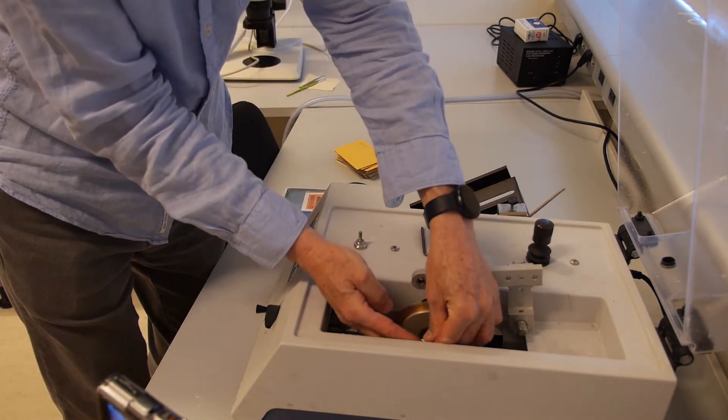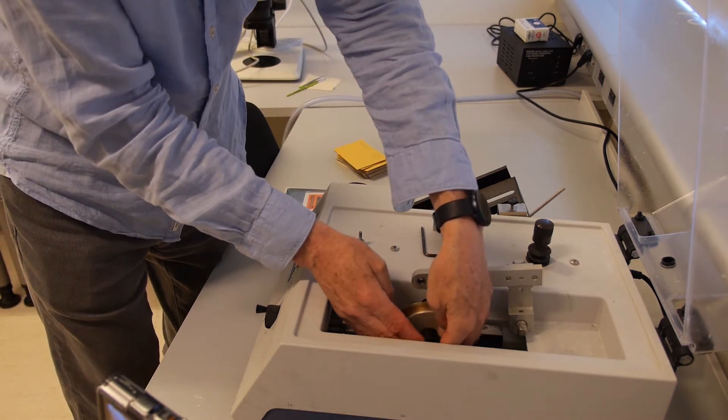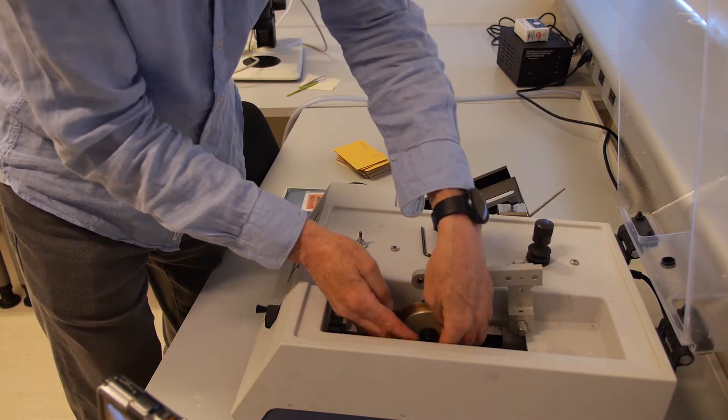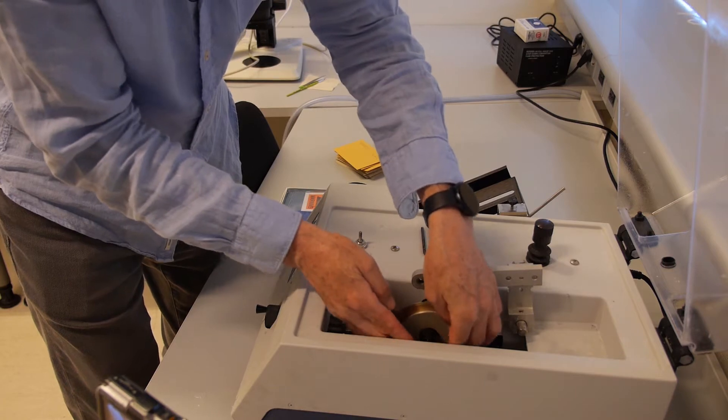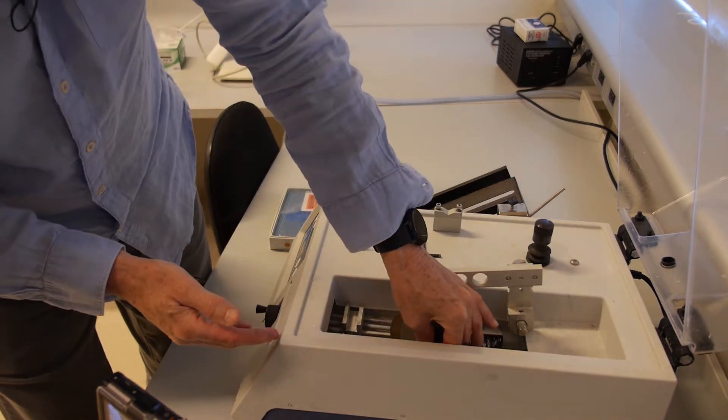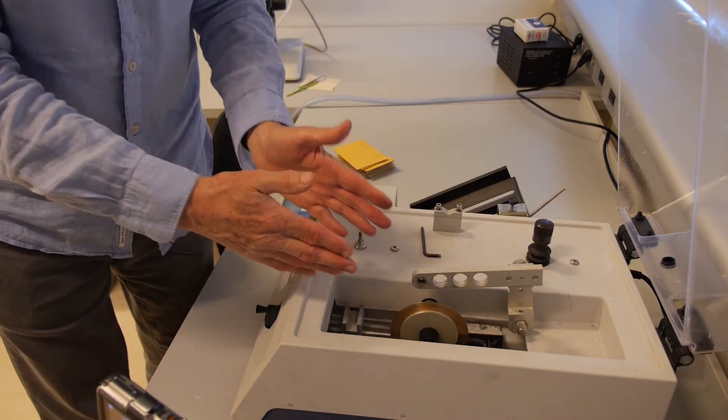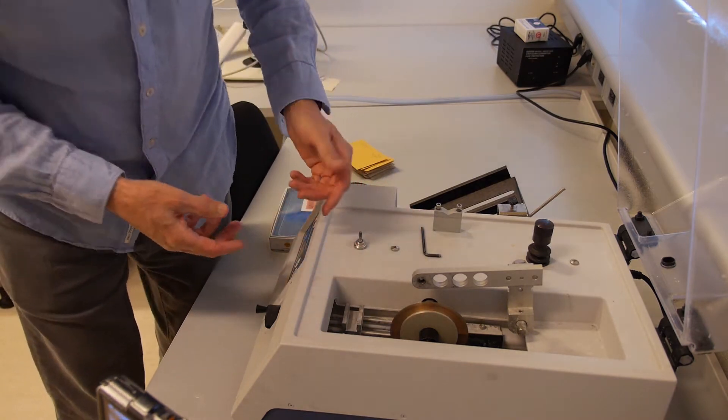You're going to put it in the end of this black knurled knob and tighten it up. Basically, the blade now is just encased with those two flanges and everything to hold it in position.